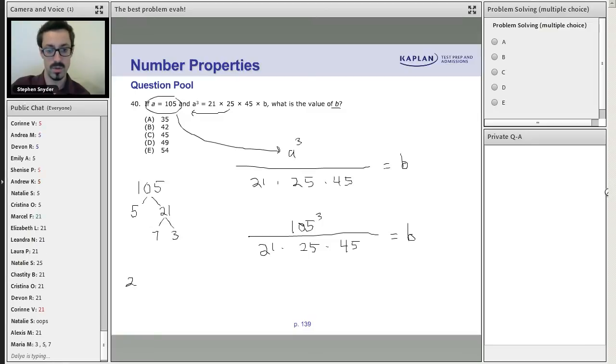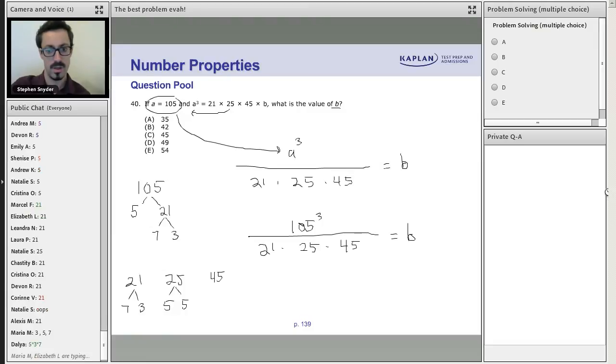We'll go ahead and break this down. 21 we know breaks down into 7 and 3, that's right Maria. So 21 we've already done - 7 and 3. 25 is pretty easy, that's just going to be 5 and 5.